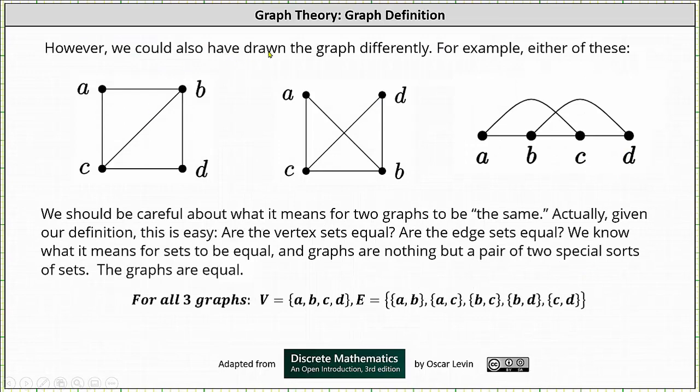However, we could have also drawn the graph differently. The two graphs on the right are the same as the graph on the left. We say they're the same because they have the exact same vertices and the exact same edges.